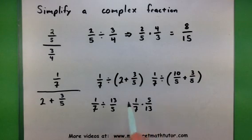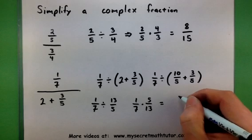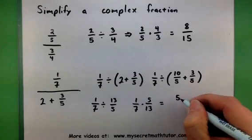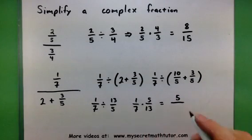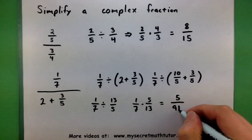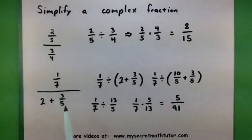And, of course, just like before, multiply across the top, multiply across the bottom, and we are done. So, here's a 5 for the top. It looks like a 91 for the bottom. So, this entire complex fraction reduces to 5 over 91.